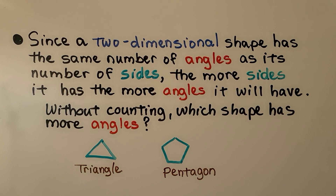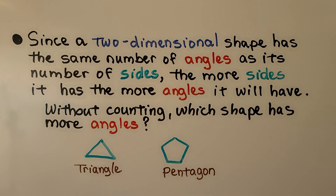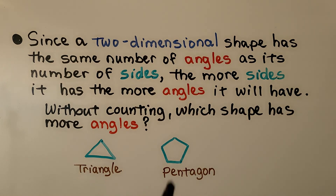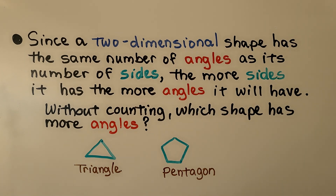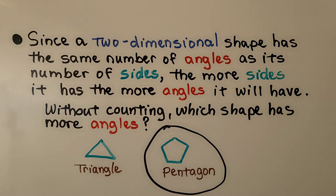Since a two-dimensional shape has the same number of angles as its number of sides, the more sides it has, the more angles it will have. So without counting, which shape has more angles? If it's got more sides, it's got more angles. The pentagon has more sides — it has one, two, three, four, five sides — and a triangle only has one, two, three. So because the pentagon has five sides, which is more than the three sides on a triangle, we know it has five angles, where the triangle only has three angles. So the pentagon has more angles.